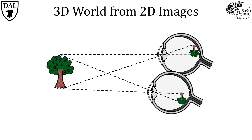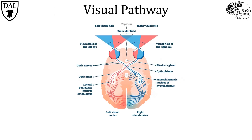To better visualize how images from the visual world travel from the eyes to the brain, let's look at a top-down view of the human visual pathway. Information from our visual world enters through both eyes, hitting each retina at a slightly different angle, so each eye gets a slightly different perspective of the visual scene.